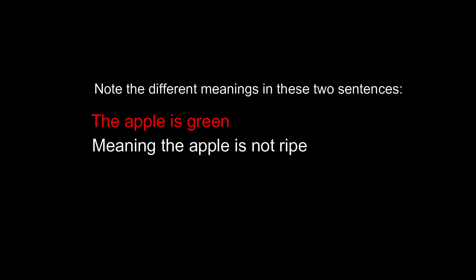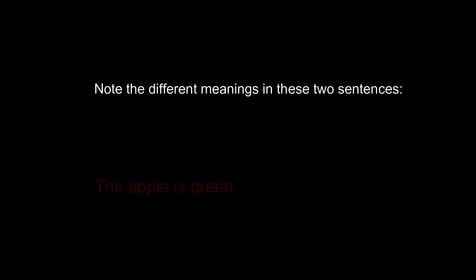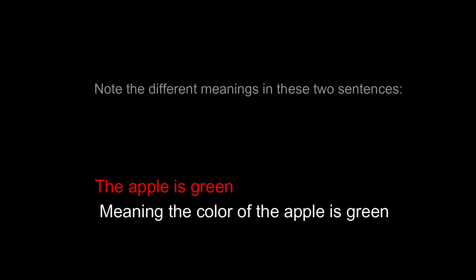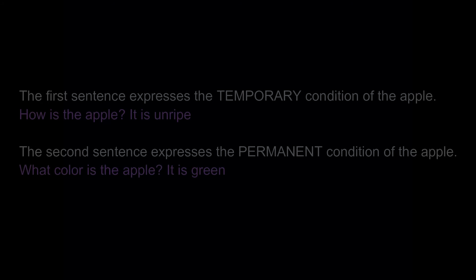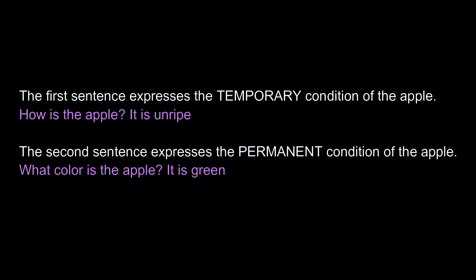Note the different meanings in these two sentences. 'The apple is green,' meaning the apple is not ripe. And 'the apple is green,' meaning the color of the apple is green. The first sentence expresses the temporary condition of the apple — how is the apple? It is unripe. The second sentence expresses the permanent condition — what color is the apple? It is green.